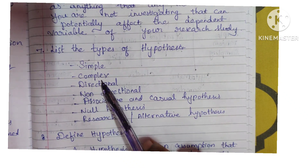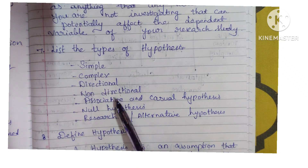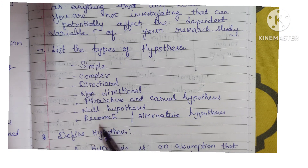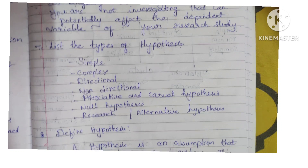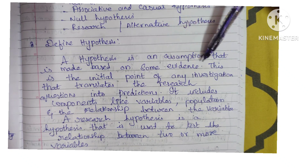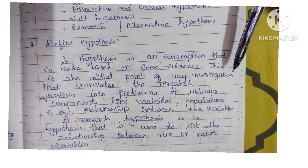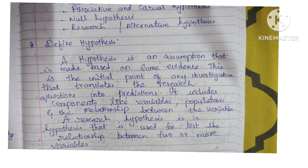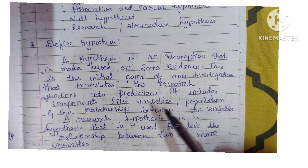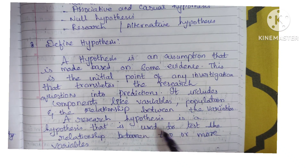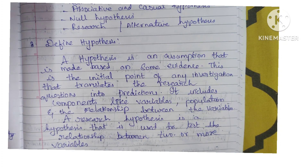List the types of hypothesis: simple hypothesis, complex hypothesis, directional hypothesis, non-directional hypothesis, associative and casual hypothesis, null hypothesis, research or alternative hypothesis. Define hypothesis: a hypothesis is an assumption that is made based on some evidence. This is the initial point of any investigation that translates the research question into predictions. It includes components like variable, population, and the relationship between the variables. A research hypothesis is used to test the relationship between two or more variables.